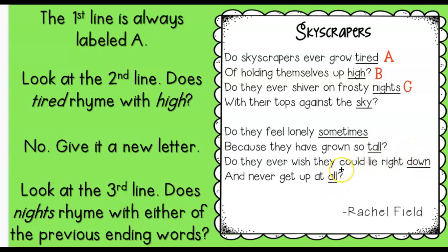So the last word of the first line is always assigned A — tired. Let's look at the second line: high. Does high rhyme with tired? Nope. So we're going to give it a B. Let's look at the third line: nights. Does nights rhyme with tired? Nope. Does nights rhyme with high? Nope. So it's going to be letter C. So right now we have an A, B, C pattern.